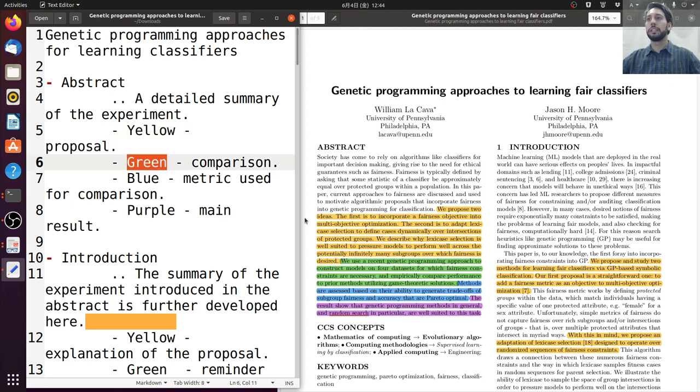In the green part, they comment about the comparison. They are using genetic programming to construct models on data sets. These data sets have constraints that are needed to be addressed. They empirically compare the performance, utilizing game theoretic solutions.